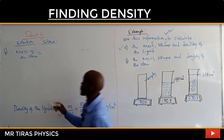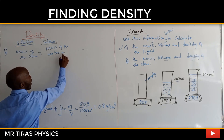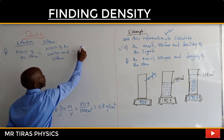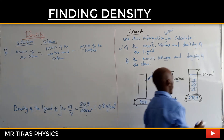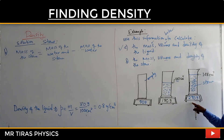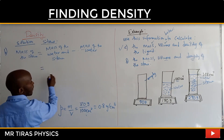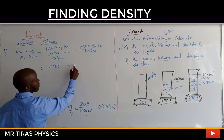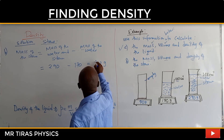For part B, we get the mass of the stone from the mass of the water and stone minus the mass of the water. When you have the stone inside, you have the total mass of stone and water, and you subtract the mass of water to get the mass of the stone. So this will be 290 minus 170, giving us 120 grams.